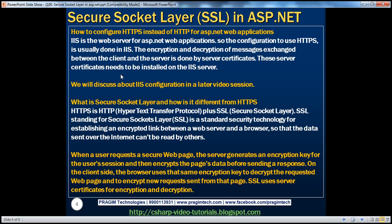What is Secure Socket Layer, and how is it different from HTTPS? HTTPS is essentially HTTP plus SSL — Hypertext Transfer Protocol plus Secure Socket Layer. SSL is a standard security technology for establishing an encrypted link between a web server and a client browser, so that data sent over the internet can't be read by others. When a user requests a secure web page, the server generates an encryption key for the user session, encrypts the page data, and sends the response. The browser uses the same key to decrypt the page and encrypt new requests. SSL uses server certificates for encryption and decryption.